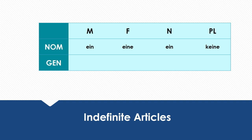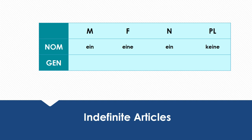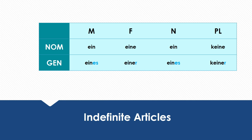Let's take a look at how the articles change in the genitive case. In the nominative case we have: ein, eine, ein, keine. Remember there's no indefinite plural article in German — that's why I used 'keine.' In the genitive case the indefinite articles are as follows: eines, einer, eines, keiner.